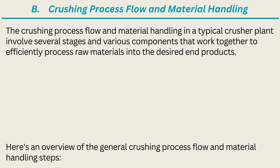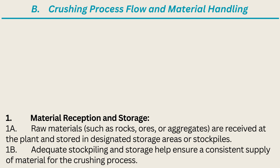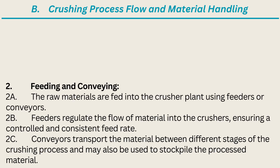The crushing process flow and material handling in a typical crusher plant involves several stages and various components that work together to efficiently process raw materials into the desired end products. Here's an overview: 1. Material Reception and Storage. Raw materials such as rocks, ores, or aggregates are received at the plant and stored in designated storage areas or stockpiles. Adequate stockpiling and storage help ensure a consistent supply of material for the crushing process. 2. Feeding and Conveying. The raw materials are fed into the crusher plant using feeders or conveyors. Feeders regulate the flow of material into the crushers, ensuring a controlled and consistent feed rate. Conveyors transport the material between different stages of the crushing process and may also be used to stockpile the processed material.